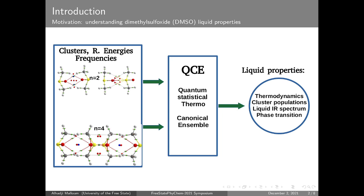When one can accurately determine the different structures of a given liquid — in this case DMSO — from small cluster sizes (N=2) to as large as possible, one can use these structures and their relative energies in the Quantum Cluster Equilibrium theory to determine properties of liquids. That is the main motivation of this work.